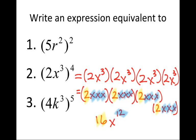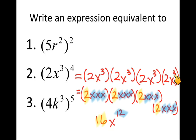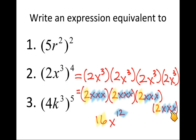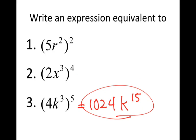For the second problem: 2x cubed raised to the 4th power. The power of 4 gives 2x cubed × 2x cubed × 2x cubed × 2x cubed. Coefficients: 2 × 2 × 2 × 2 = 16. Count the x's: 12 total, so x to the 12th power. Answer: 16x to the 12th. For the last problem, the answer is given directly — ask if you need help working through it.